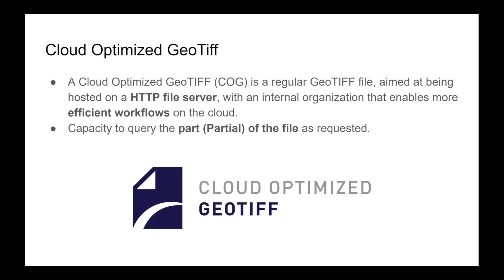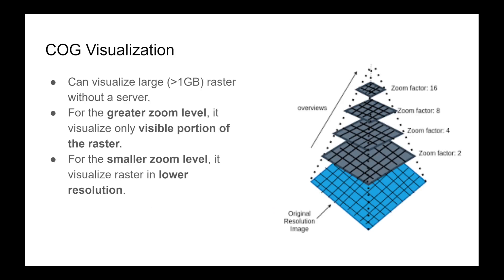COG has the capacity to query part of the file as requested, so right now we can define our area of interest and then download only the required portion. If you don't know how to do that using Google Earth Engine, I have a video linked in the description below — check that out.